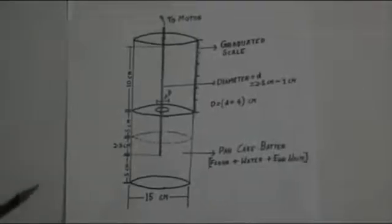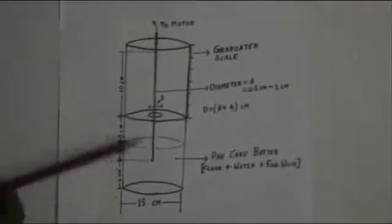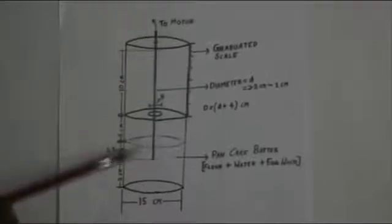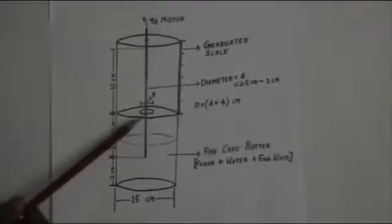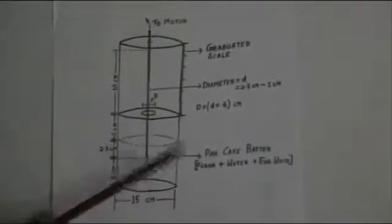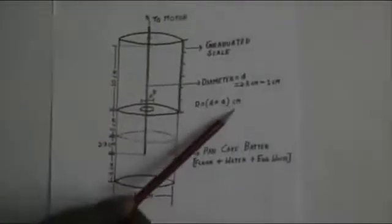The setup for the experiment is as follows. Here we have two transparent cylinders with flat top and bottom and the top portion has a hole so that the rod can be inserted into it. The two cylinders are connected with a lid which has a hole of diameter capital D which is related to small d, the diameter of this rod, by the relation capital D equals small d plus 4 cm.